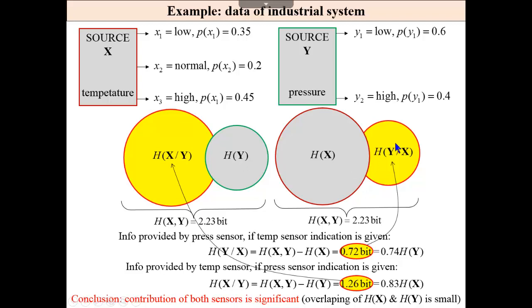For this exemplary problem, we have entropy of y if x is given 0.72, which is 74% of entropy of y. Entropy of x, if y is given, is 1.26, which is 83% of entropy of x. Then once again, contribution of both sources is significant.